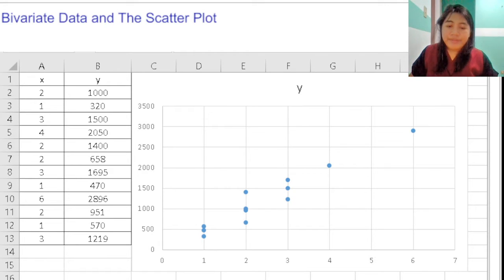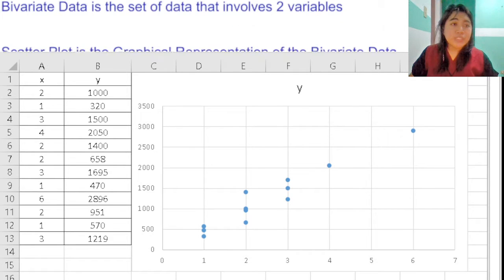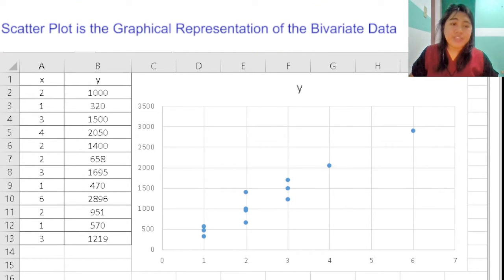We're going to talk about bivariate data and the scatterplot. Bivariate data is defined as a set of data that involves two variables, while the scatterplot is the graphical representation of bivariate data.